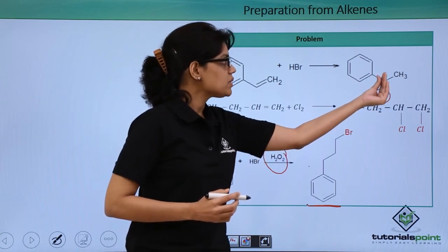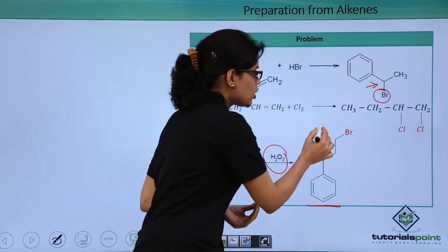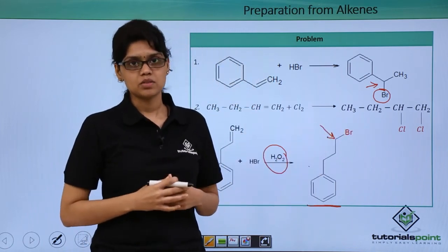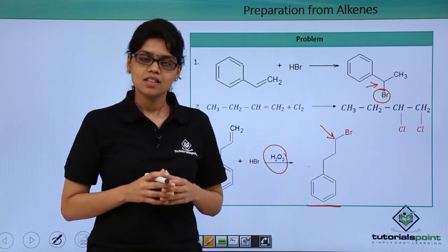Because in the first reaction bromine has been added to that particular carbon which has less number of hydrogen atoms, while here according to anti-Markovnikov's rule, bromine is added to carbon having more number of hydrogen atoms. I hope you are very clear on how we have arrived at these as the final products. Thank you.